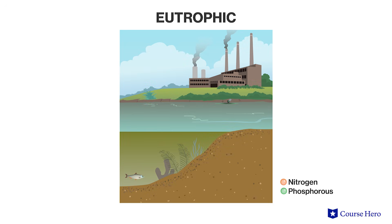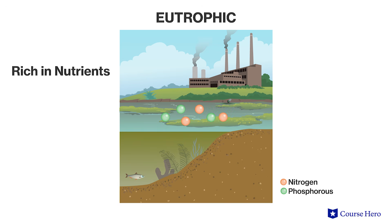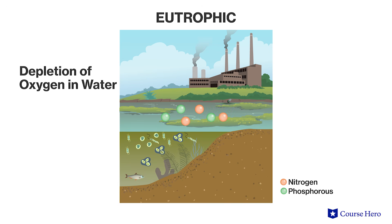Eutrophic lakes are rich in nutrients, which leads to algal blooms. This in turn leads to the depletion of oxygen in the water, affecting aquatic life.